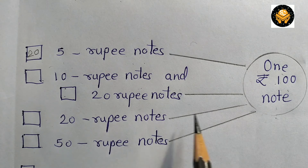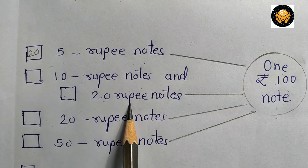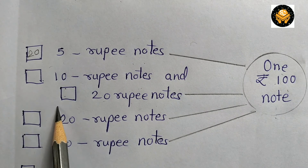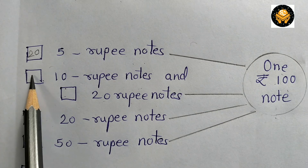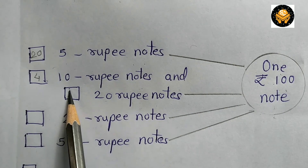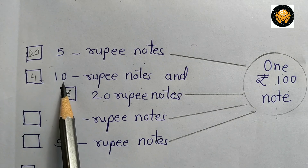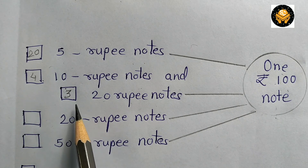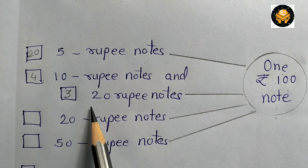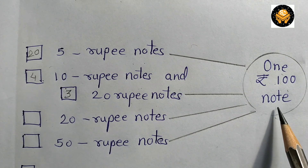If you want the change in the form of 10 rupee notes and 20 rupee notes, you can use 4 ten-rupee notes and 3 twenty-rupee notes. 4 ten-rupee notes equal 40 rupees and 3 twenty-rupee notes equal 60 rupees, and 40 plus 60 is 100.